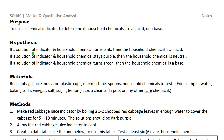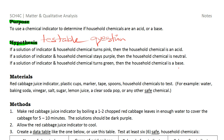The next part of your project will have these headings. Purpose: you can copy this — our purpose is to use a chemical indicator to determine if household chemicals are an acid or a base. The next thing is your hypothesis. A hypothesis is a fundamental part of the scientific process — it is a testable question. So: if a solution of indicator and household chemicals turns pink, then the household chemical is an acid. If it stays purple, then it is neutral. And if it turns green, then the household chemical is a base, just as we saw on the indicator scale.